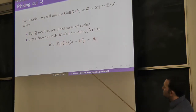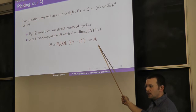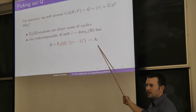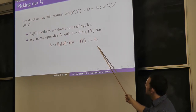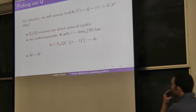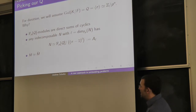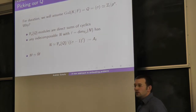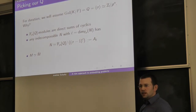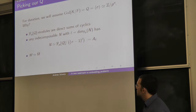I may use this module A sub L again later. Another reason to like this setup: M and M-dual are isomorphic to each other — non-canonically, but at least they're isomorphic, which is nice.